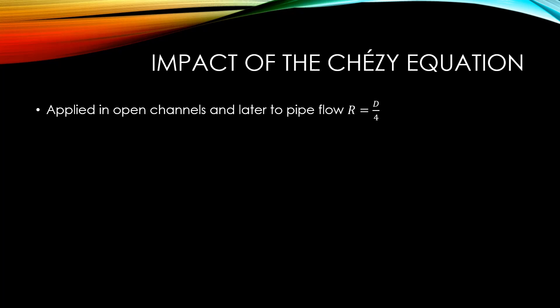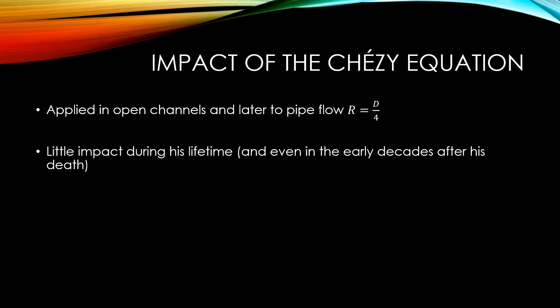Chézy's equation was originally applied for open channels, but later he applied it to pipe flow, taking that the hydraulic radius — equal to the ratio of the area of a pipe to its wetted perimeter — was equal to the diameter over 4. Chézy's formulation had very little impact during his lifetime, and even in the early decades after his death. His proposed design was not accepted at first, and after some resistance, when he was finally given permission to construct, his construction was not finished due to the French Revolution. However, his equation was the first and the longest lasting flow resistance formula — a precursor to the Darcy-Weisbach equation and to the Manning equation, which we will cover later.